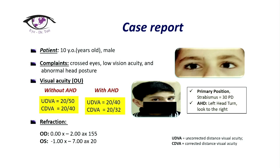After total examination, we checked visual acuity with and without abnormal head deviation. The uncorrected distance visual acuity without abnormal head deviation was 20/50, and corrected visual acuity was 20/40. With abnormal head deviation, visual acuity was better — uncorrected distance visual acuity was 20/40 and corrected was 20/32. We also noted significant astigmatism in the refraction, with a particularly high astigmatism value on the left eye.